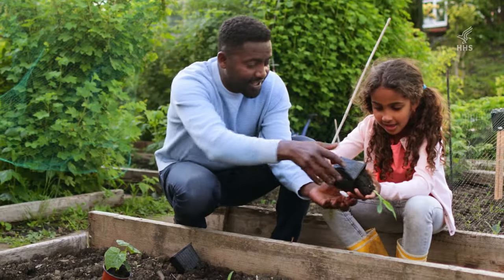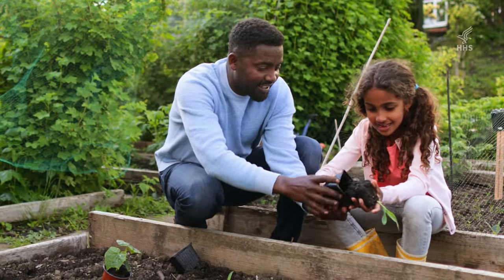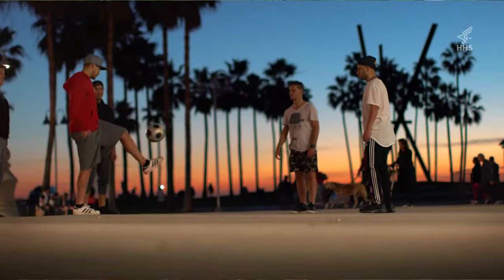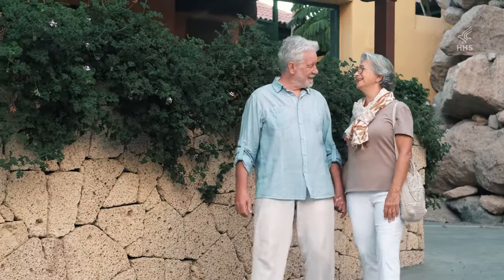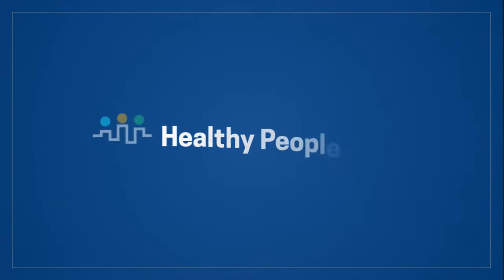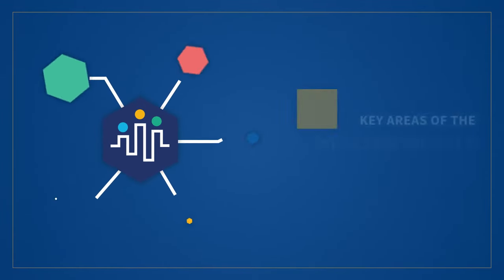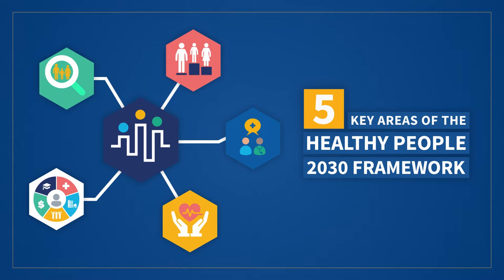Healthy People 2030's framework includes a vision in which all people can achieve their full potential for health and well-being. I'm Admiral Rachel Levine, Assistant Secretary for Health at the United States Department of Health and Human Services. The Healthy People 2030 framework details five key areas to address in our work to improve health and well-being for all people.